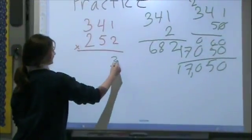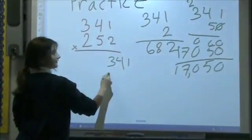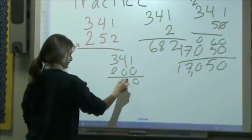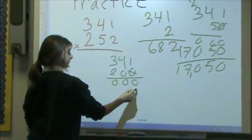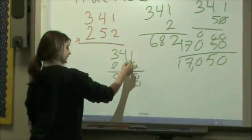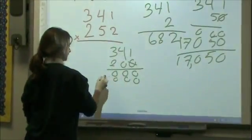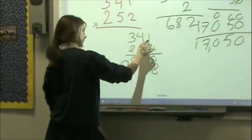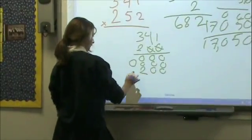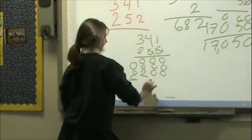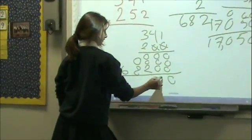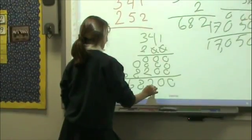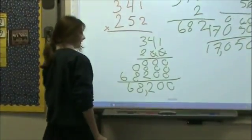The last step is to multiply 341 times 200. We place two zeros in the ones and tens columns, then multiply 341 times 2 to get 2, 8, and 6 — giving us 68,200 as our final partial product.